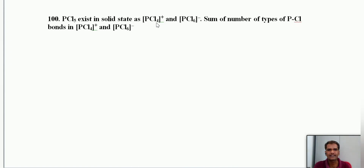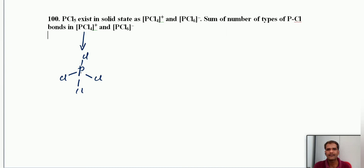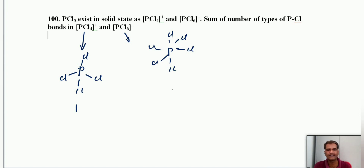PCl5 in solid state exists as PCl4⁺ and PCl6⁻. The sum of number of types of P-F bonds: in PCl4⁺ (tetrahedral geometry) all four P-F bonds are identical — 1 type. In PCl6⁻ (octahedral geometry) all six P-F bonds are identical — 1 type. Total sum = 1 + 1 = 2 types.